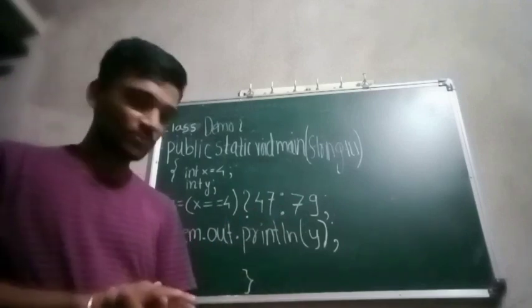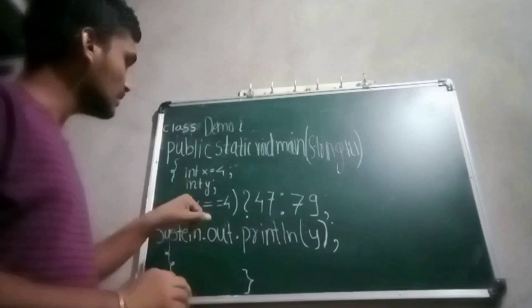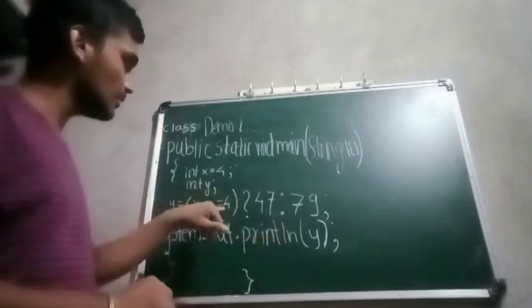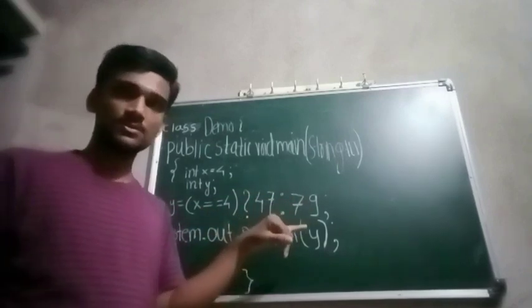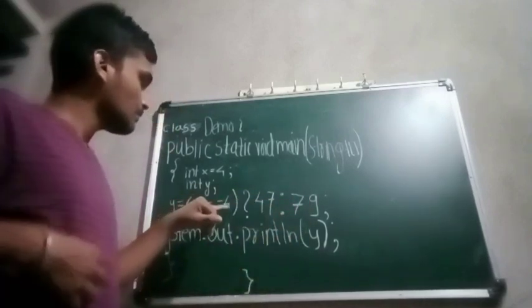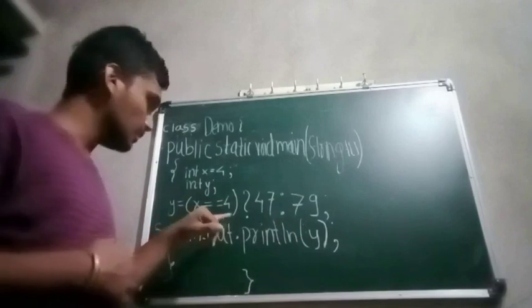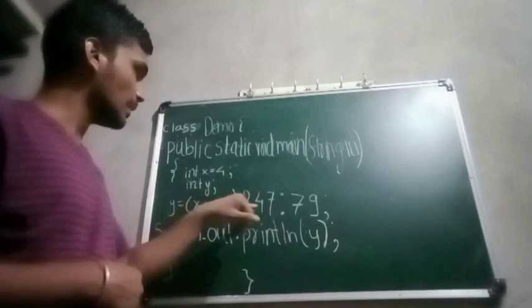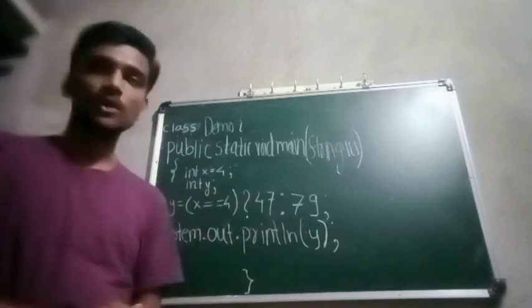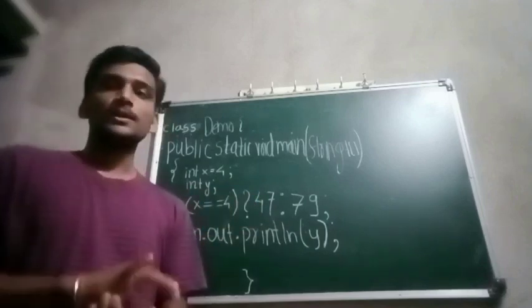Here the condition is true so it is executed. If I had given 5 instead, then the condition would be false and 79 would be executed. But here it will execute with x assigned equal to 4, and the output will be 47.